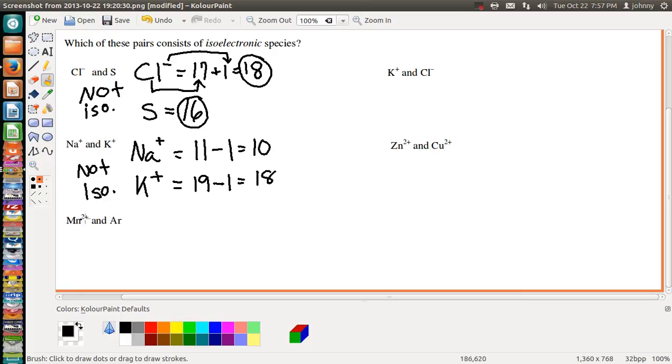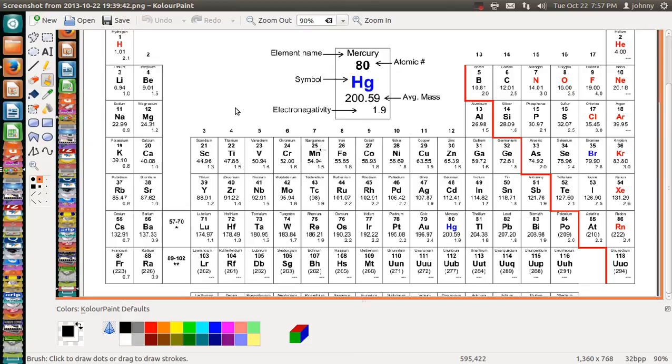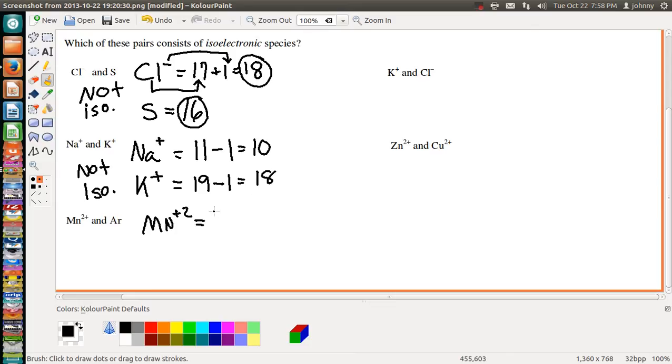Now let's look at Mn²⁺ and argon. Let's just find Mn first on the periodic table. Mn is right here. It has 25 electrons if it's neutral. So we know we should have 25 here. Now, the plus 2, should I write plus 2 here or should I write minus 2? I'll let you think about that for a second. Yeah, you're right. We should subtract 2. That gives you a total of 23 electrons.